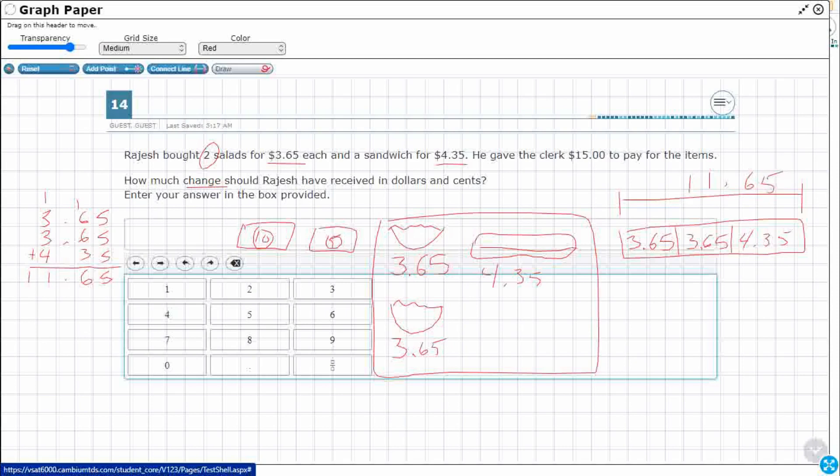And if this were a multiple choice, I can guarantee you $11.65 would be an incorrect answer. They always want you to take that subtotal and select that as an incorrect answer. But that's not what it's asking. It's asking how much change. Well, he paid with $15. The whole thing cost $11.65.